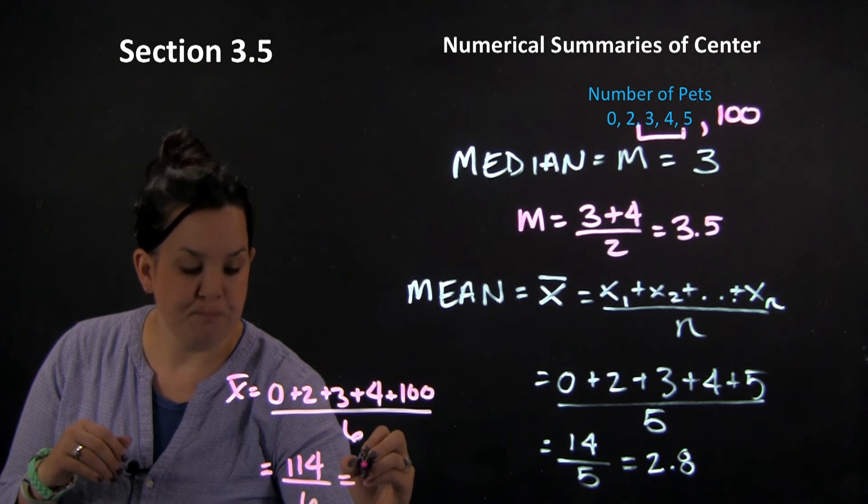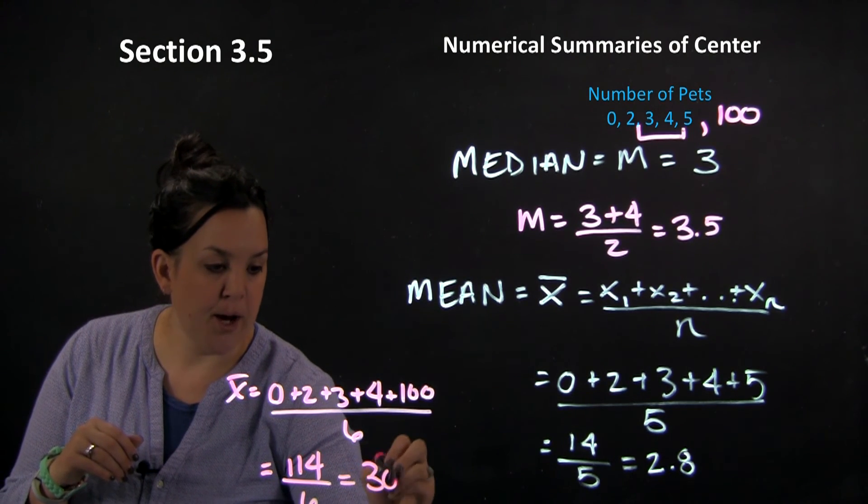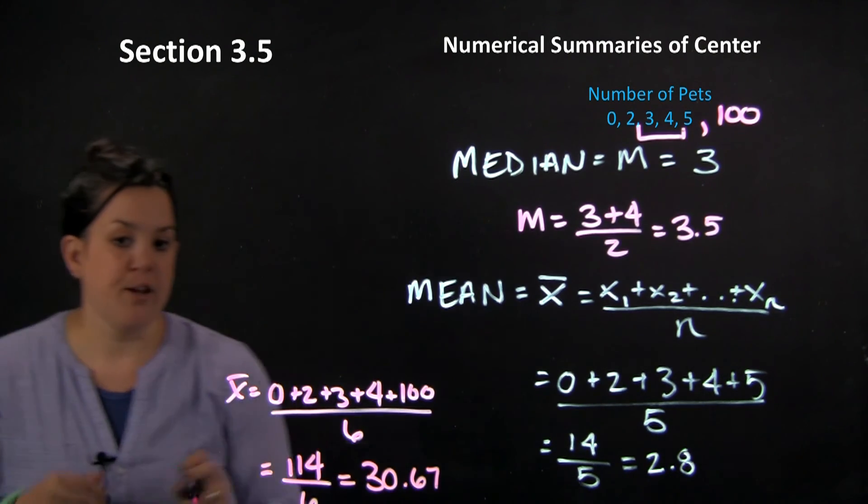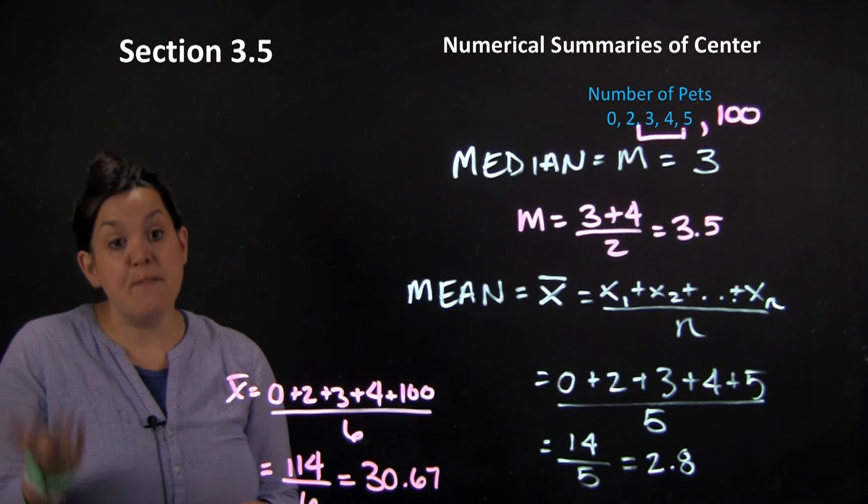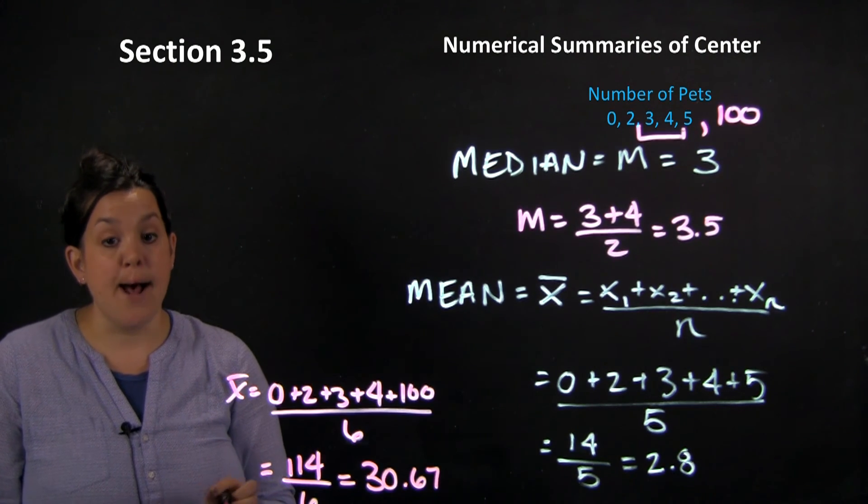So this time, I have a mean of 30.67. So you can see the significant impact that that outlier has on the mean.